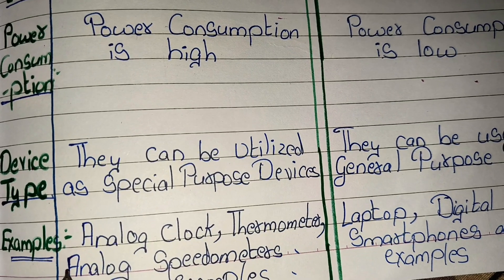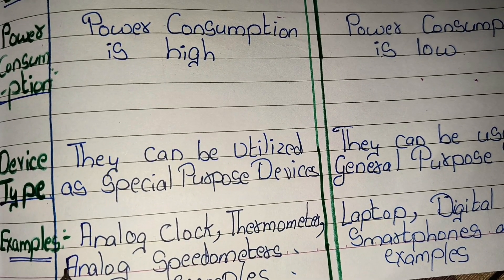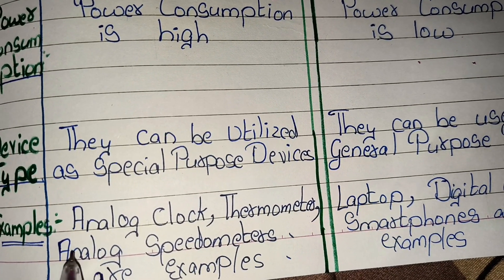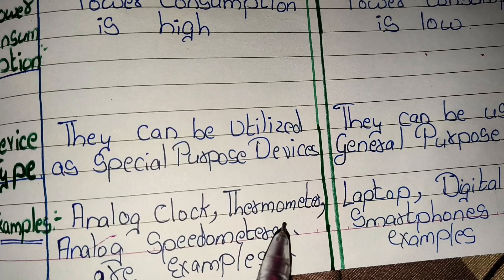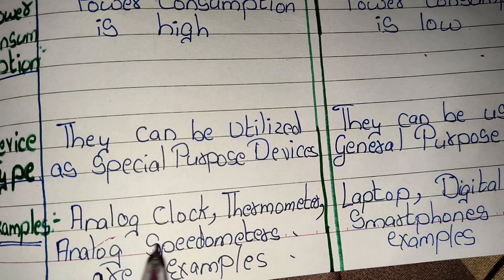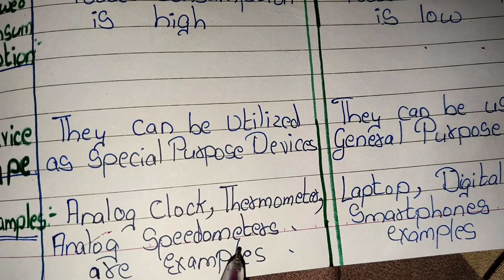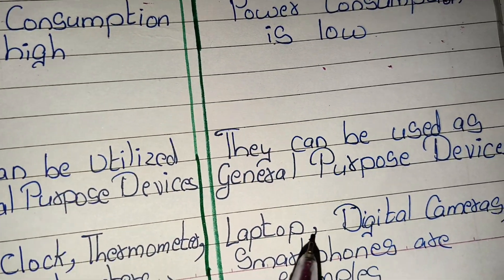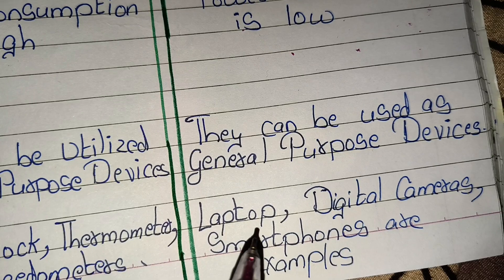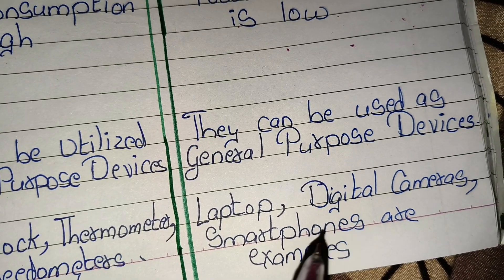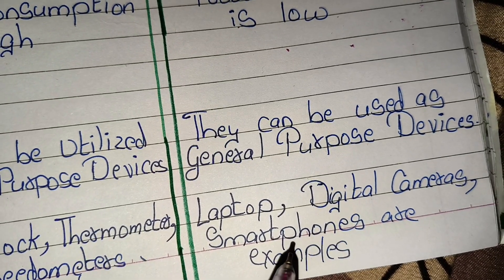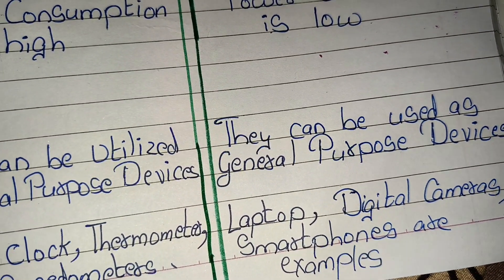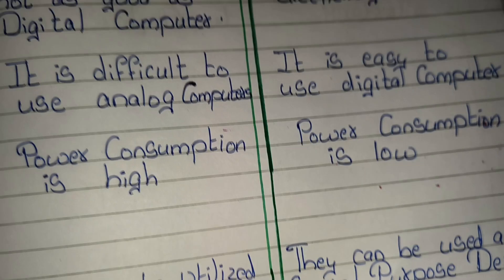Examples of analog computers are analog clock, thermometer, and analog speedometers. Examples of digital computers are laptops, digital cameras, smartphones, etc.